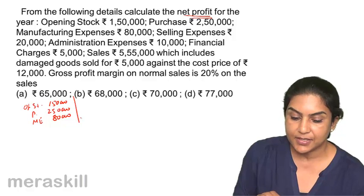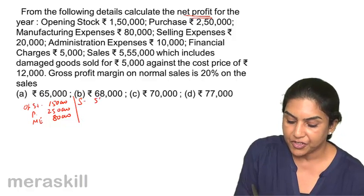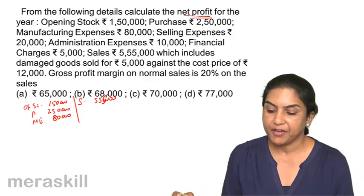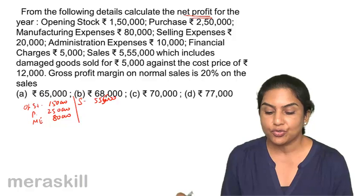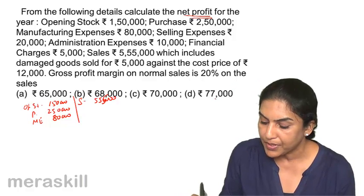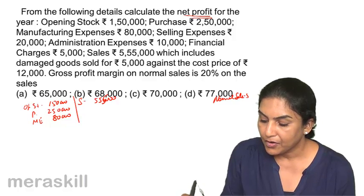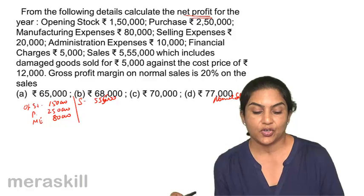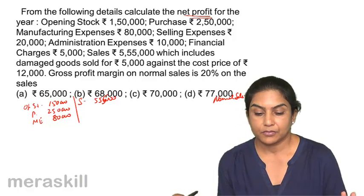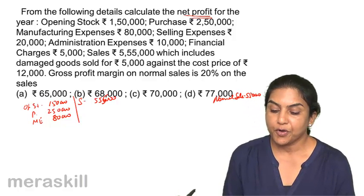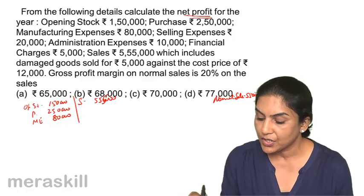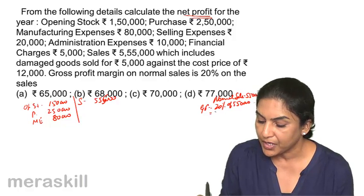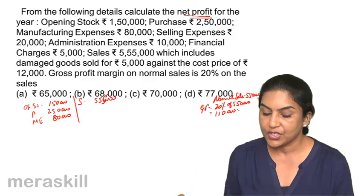Sales is 5,55,000. This includes damaged goods sold for 5,000, so your normal sales is actually 5,50,000. Gross profit margin on normal sales is 20%, therefore gross profit is 20% of 5,50,000, being equal to 1,10,000. This is gross profit.